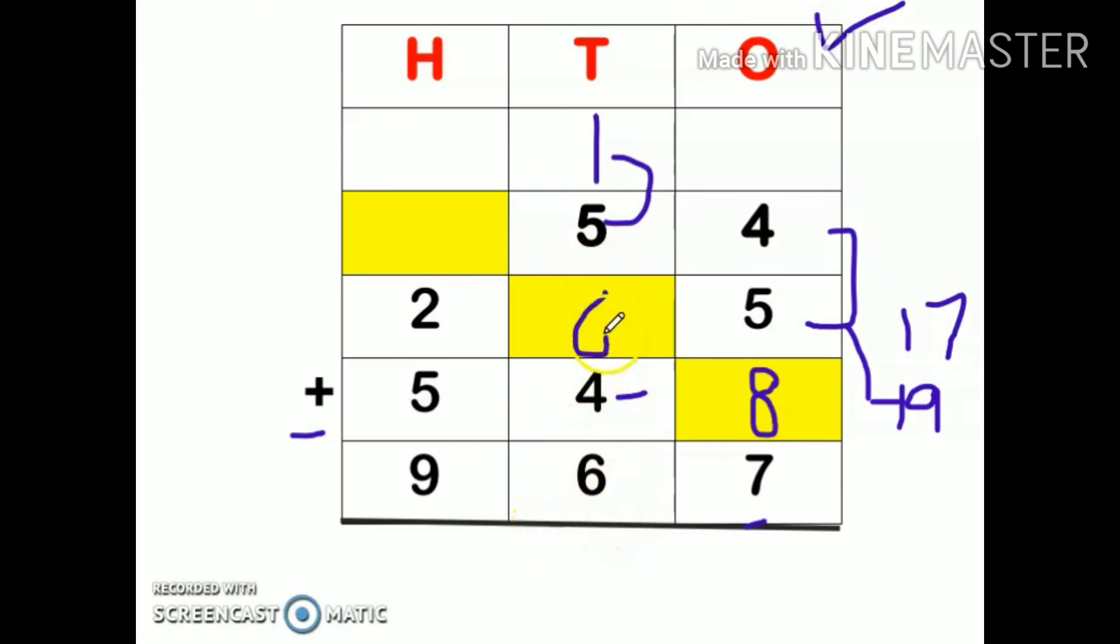5 plus 1 is 6, 6 plus 4 is 10, 10 plus 6 is 16. I have written 6 here and 1 will go up.